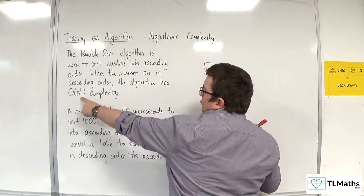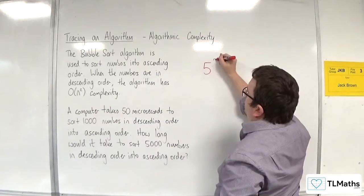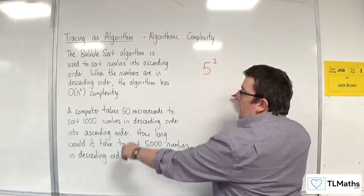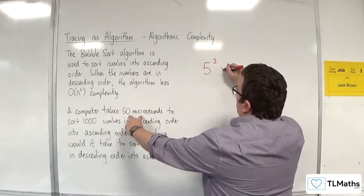It's order of n-squared complexity, so that needs to be squared, and we multiply that by the original length of time.